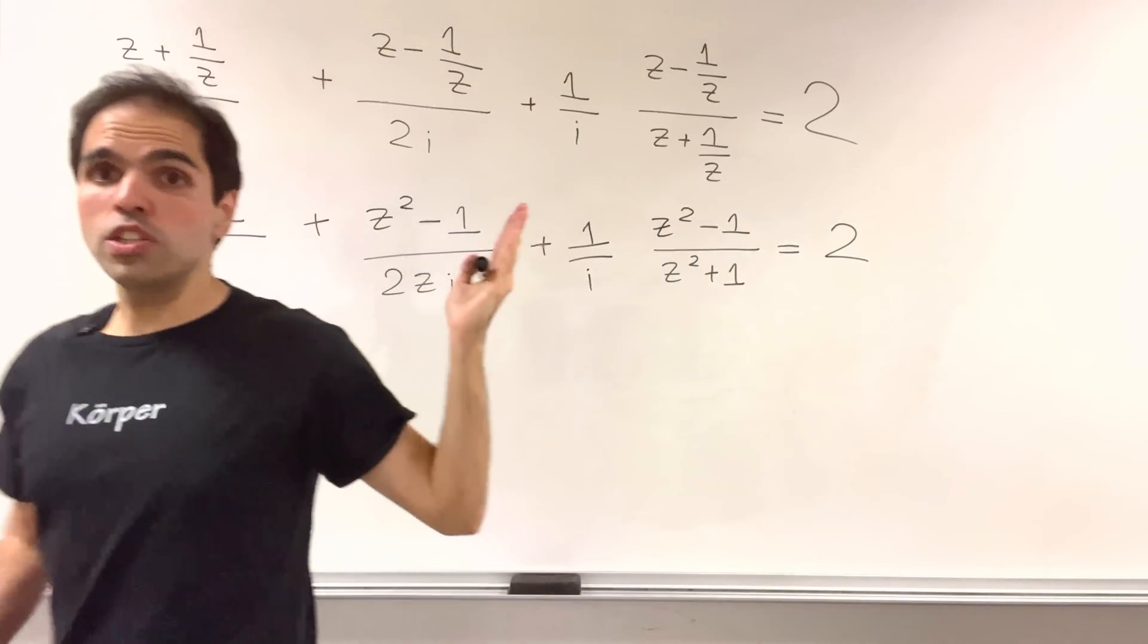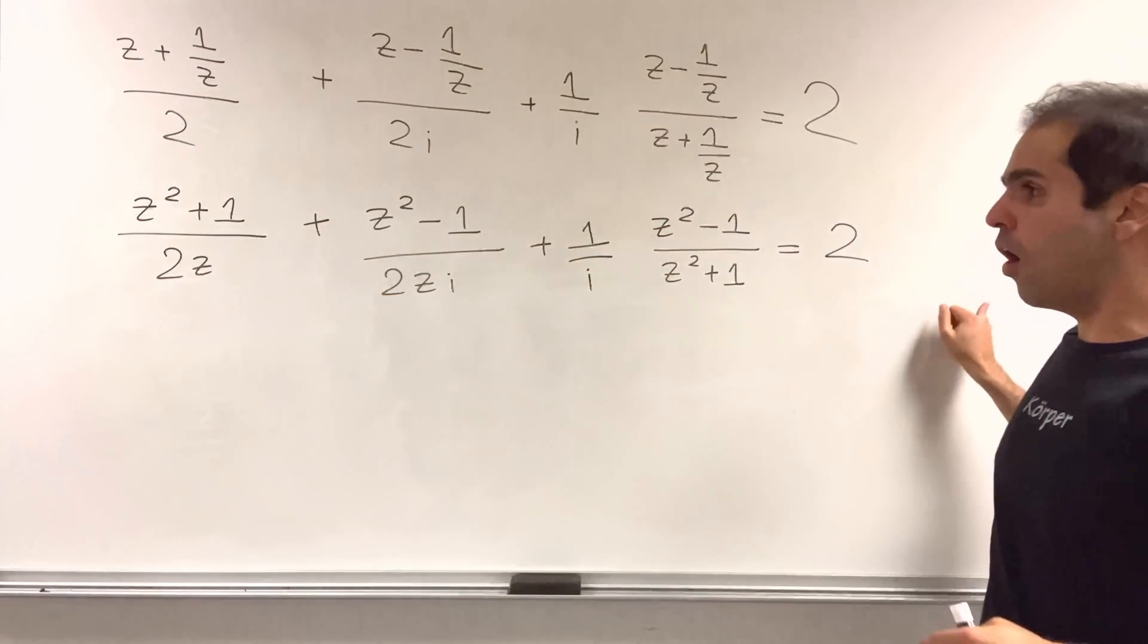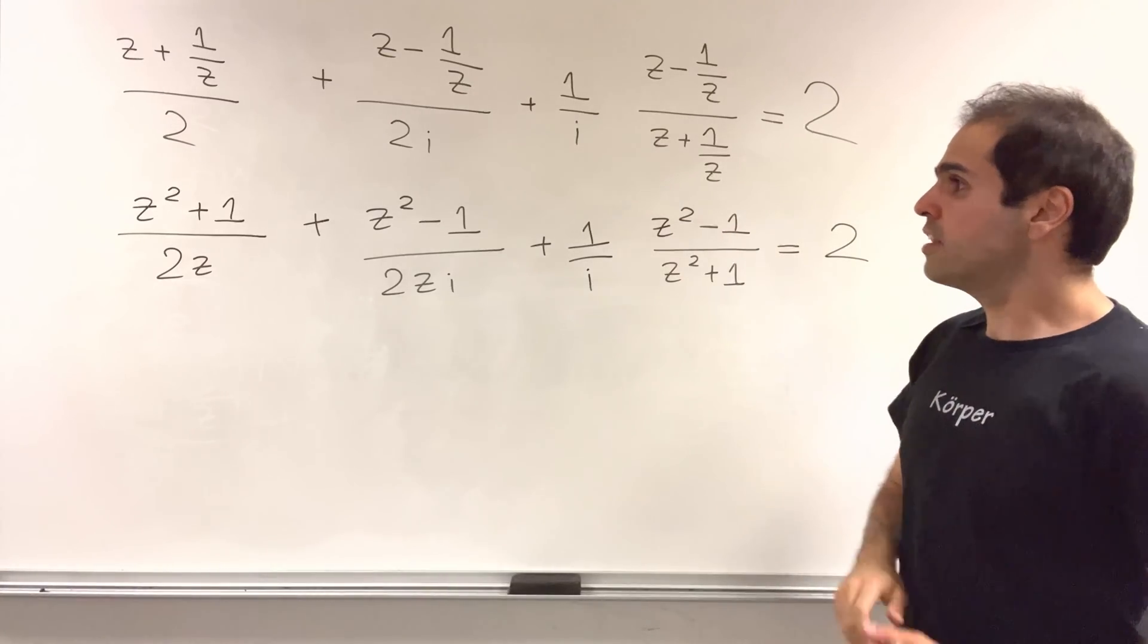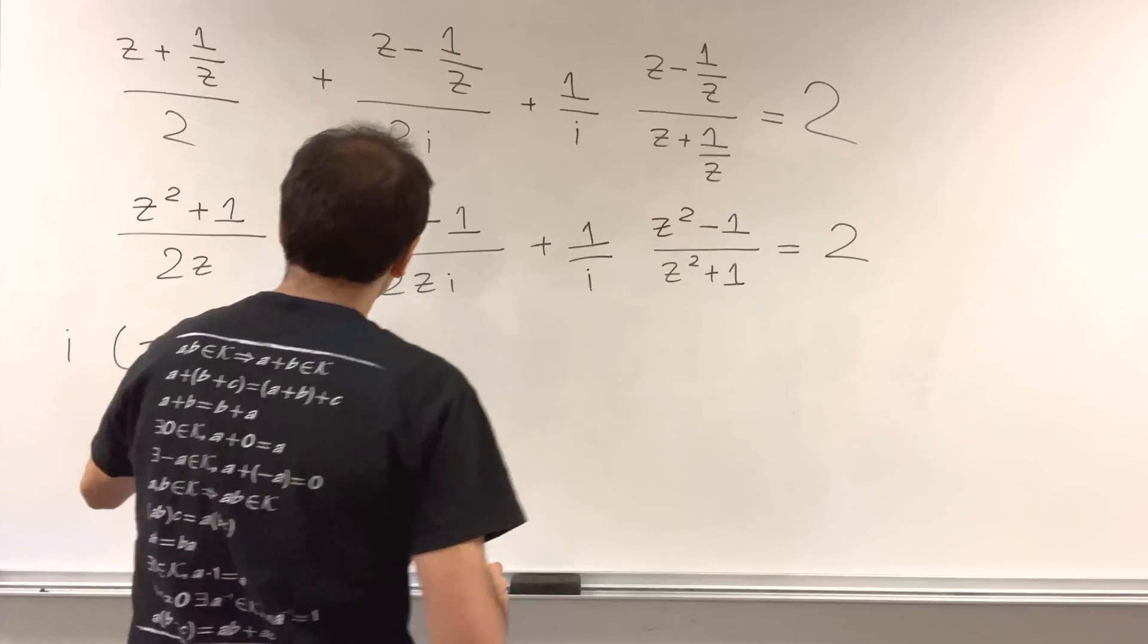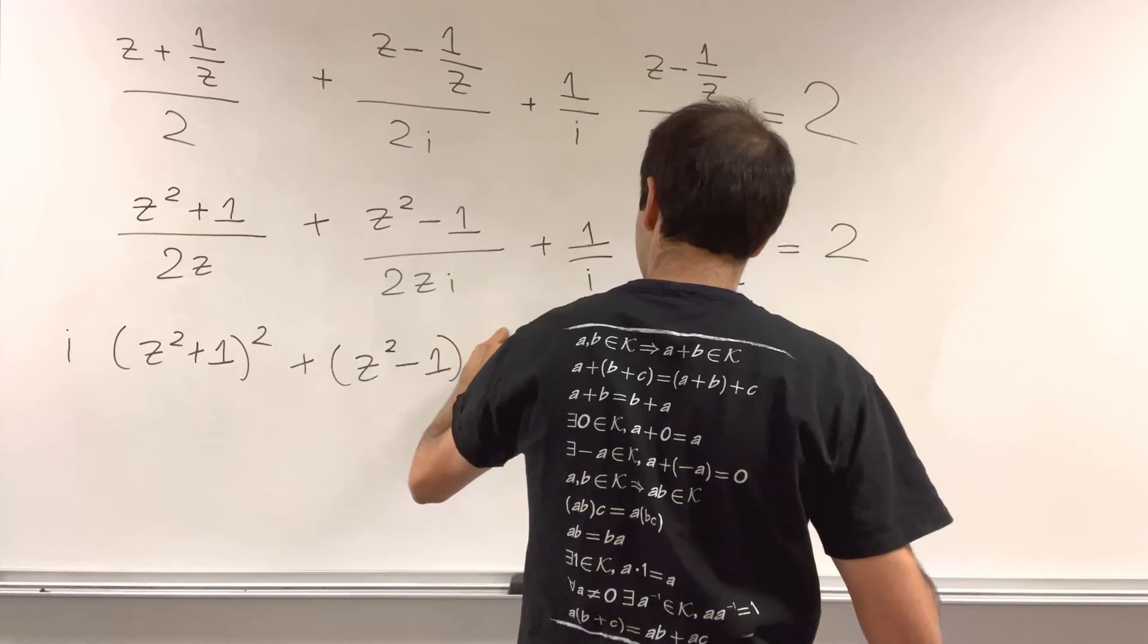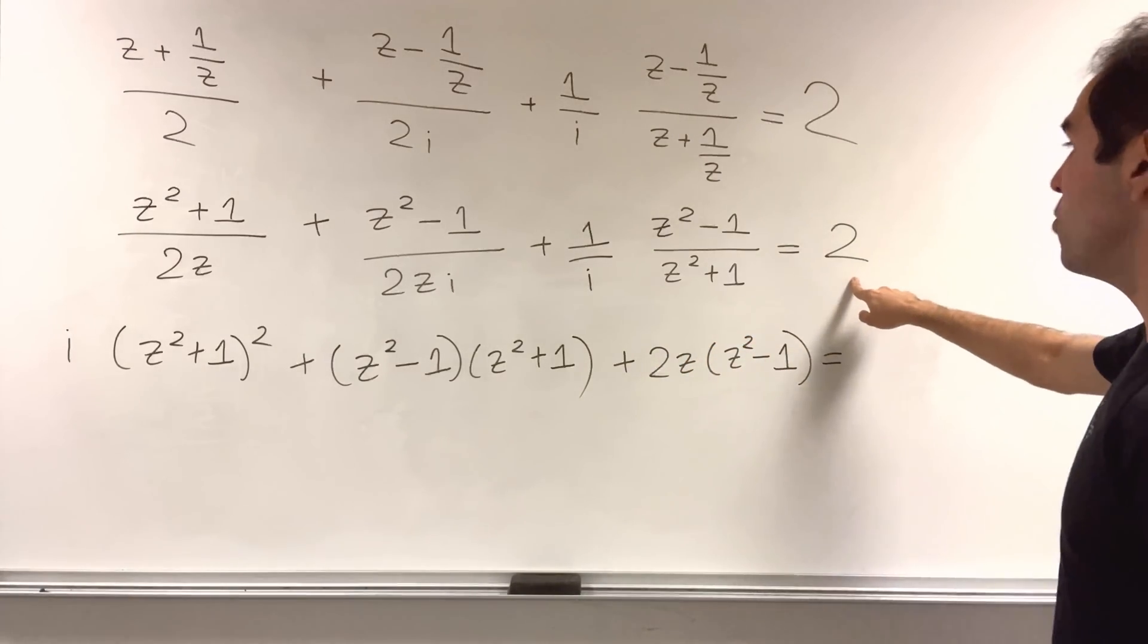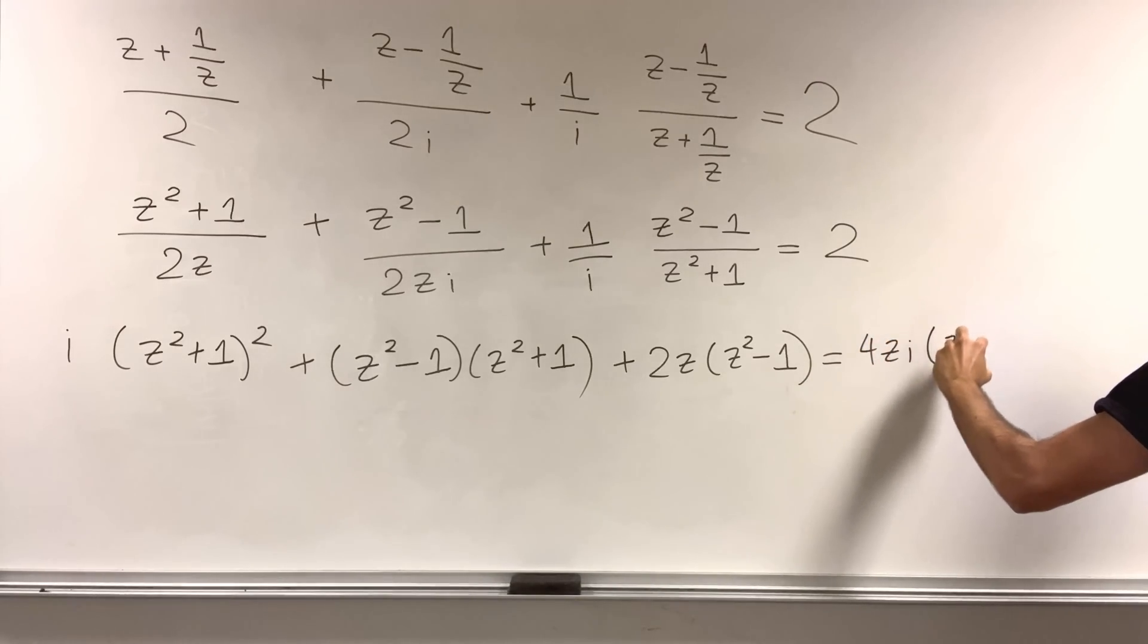And now, we just want to turn this into a polynomial equation. And all we do is multiply all sides by the denominators. So we just multiply by two zi times z squared plus one. And you end up getting the following: i times z squared plus one squared, and then plus z squared minus one times z squared plus one, and then plus two z times z squared minus one. And this now becomes four zi times z squared plus one.